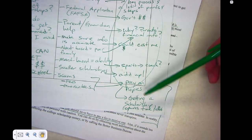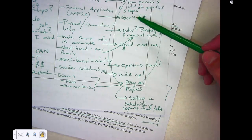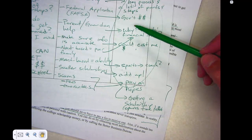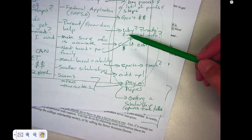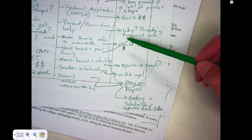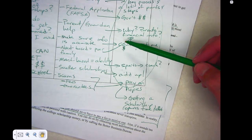That's it — that's using the KWL Plus chart as well as some pre-reading strategies. Thanks, and for more information check out mrbraiman.info.